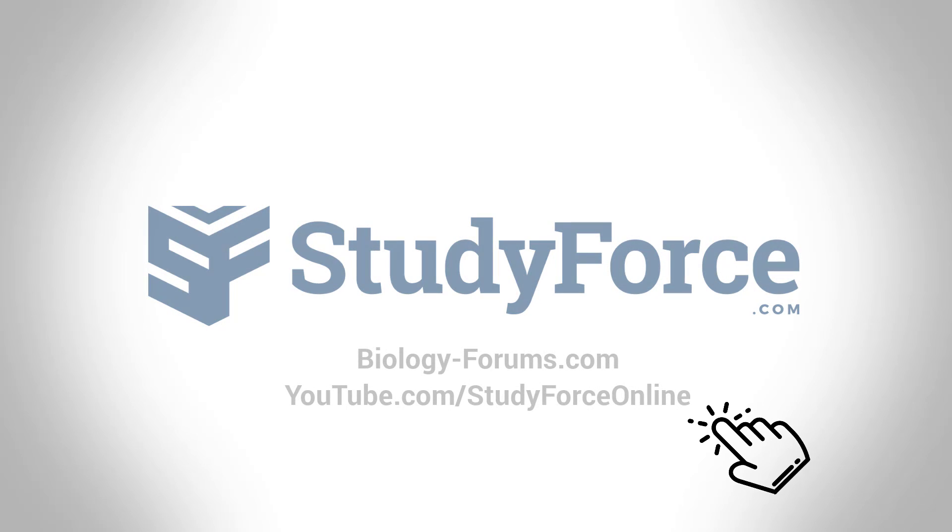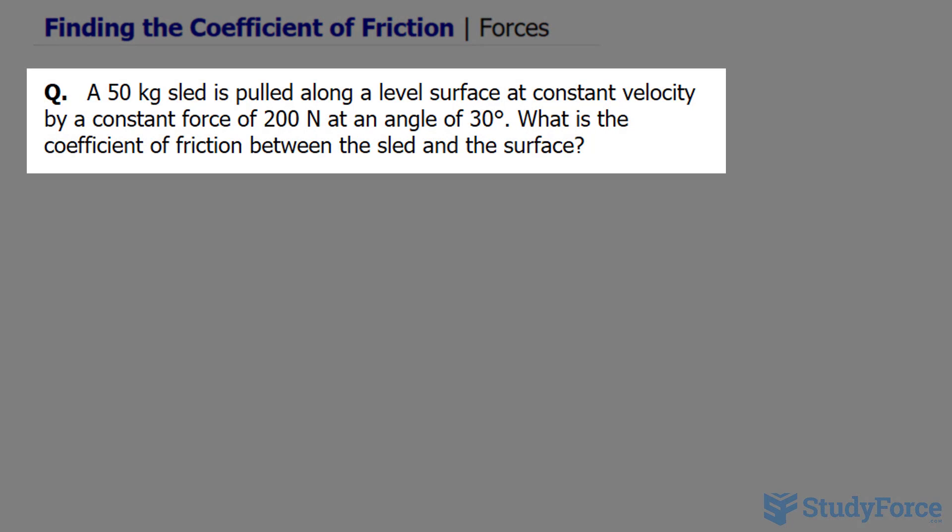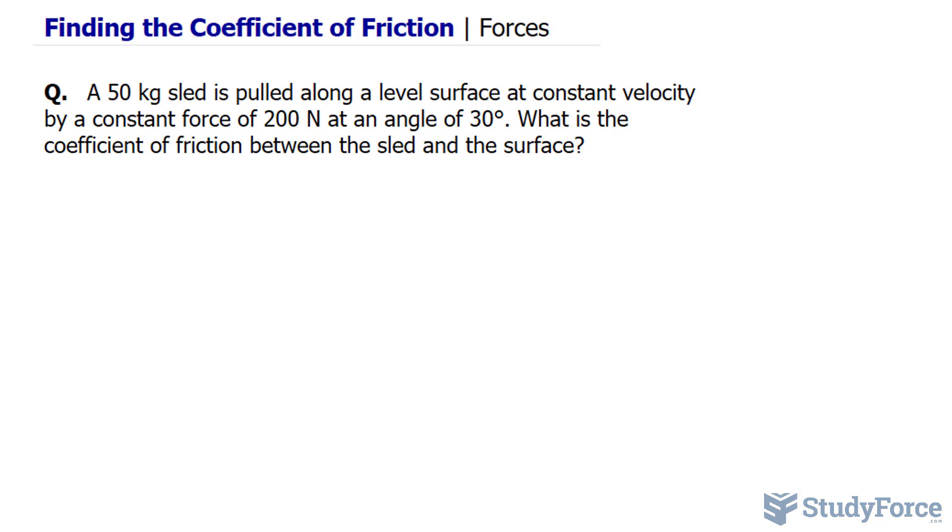In this lesson we'll go through a problem on how to find the coefficient of friction. The question reads: a 50 kilogram sled is pulled along a surface at constant velocity by a constant force of 200 newtons at an angle of 30 degrees. What is the coefficient of friction between the sled and the surface?